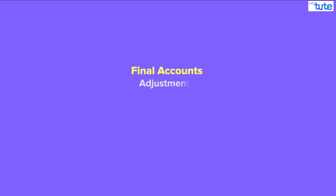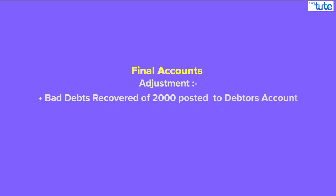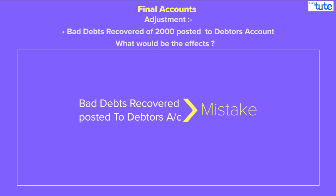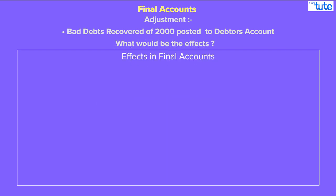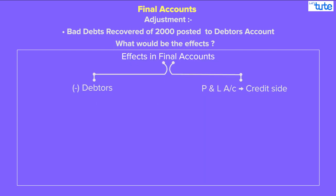I hope you understood this concept very clearly. Now let's ask you another question. If in final accounts, it is given as an adjustment that bad debts recovered of 2,000 is posted to debtor's account, then what would be the effects for the same? Or the same adjustment may be given in rectification of errors as well. Here, we all know that this is a mistake because, as discussed earlier, bad debts recovery does not go to the debtor's account and therefore we need to rectify it. So what would be the effects in the final accounts? Is your answer: less from debtor's and profit and loss credit side?